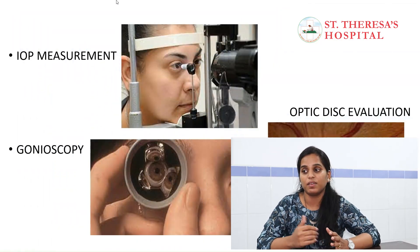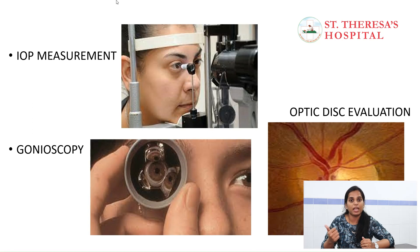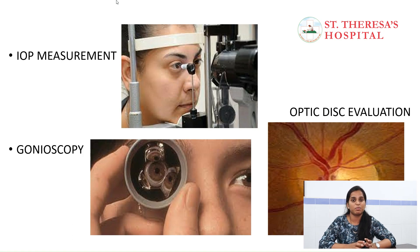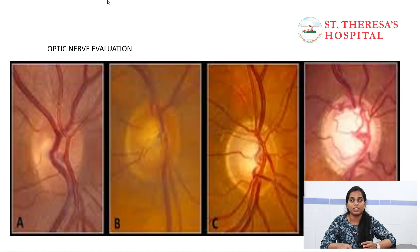So glaucoma needs to be diagnosed regularly, not just when symptoms appear. We have to do regular check-ups. The examinations include intraocular pressure measurement, gonioscopy, and optic disc evaluation. Optic nerve evaluation means checking the nerve at the back of the eye. Intraocular pressure measurement is a very basic assessment that takes hardly one minute during an OPD or eye check-up.